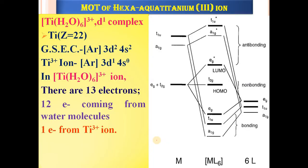We will now see the application of molecular orbital theory to the formation of octahedral complexes. The first example is the hexa aqua titanium(III) ion, [Ti(H₂O)₆]³⁺. This complex is called a D1 complex because the D orbital contains only one electron.